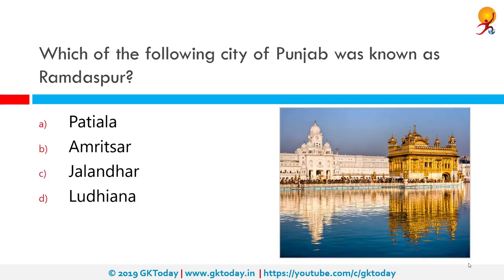Which city of Punjab was known as Ramdaspur? The correct answer is Amritsar. Amritsar, historically known as Ramdaspur, is located in the Punjab state of India. It derives its name from the Amritsarovar, built by Guru Ram Das in the village of Tung. Guru Ram Das believed that the waters of the lake had healing powers.